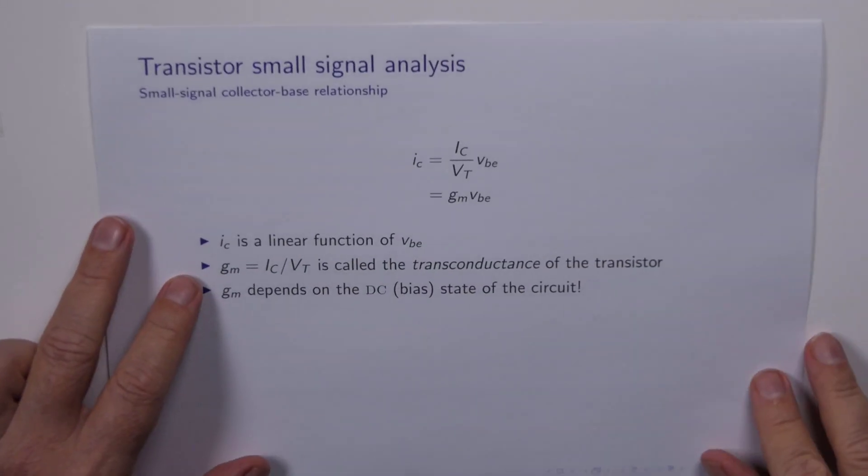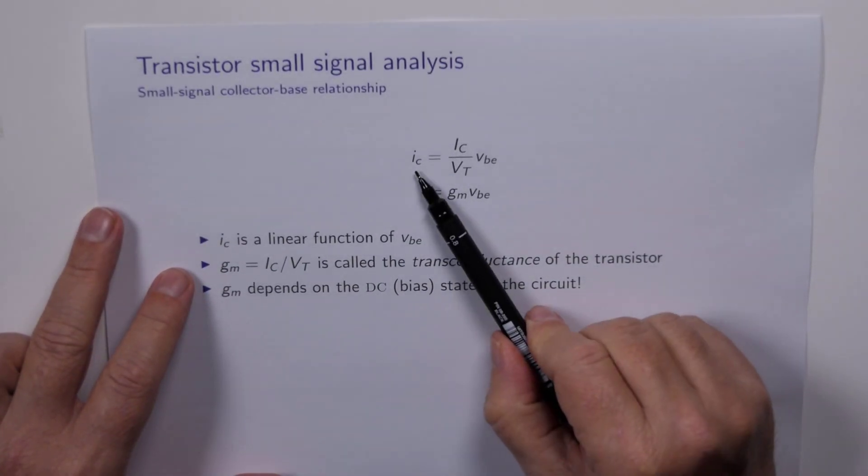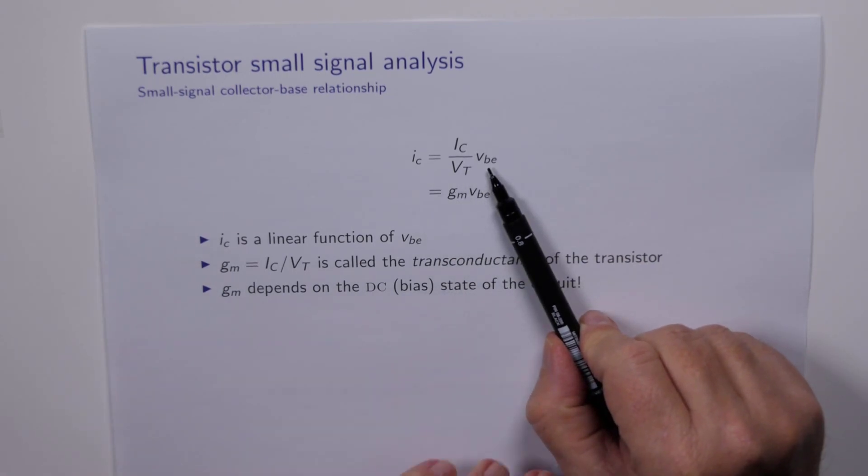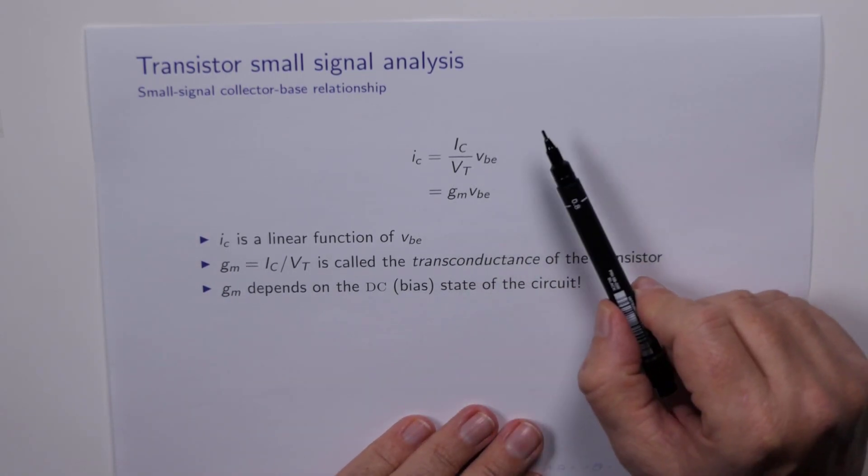So let's see how that works. We cancel out the DC collector current, meaning that we're just left with the AC collector current on the right hand side, the AC base emitter voltage, and these two terms here.